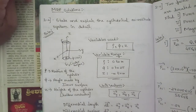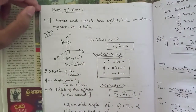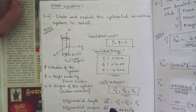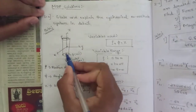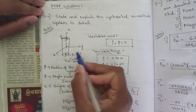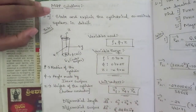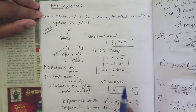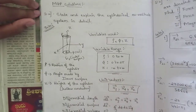The first question: state and explain the cylindrical coordinate system in detail. Draw a rough three-dimensional surface — a cylinder or hollow conductor. The uppermost circle has radius ρ (rho). There is an angle φ (phi) representing 360 degrees of a complete circle, and z is the height coming out of the surface. The variables used are ρ, φ, and z: ρ is the radius of the cylinder, φ is the angle, and z is the height of the hollow conductor.